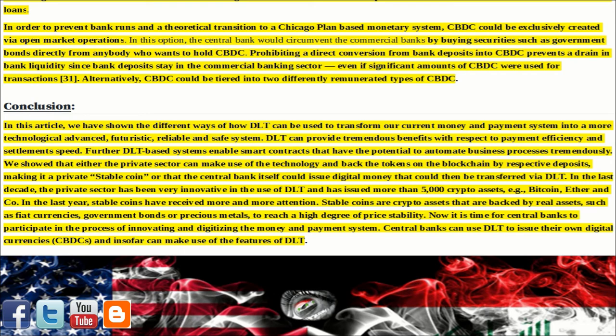In order to prevent bank runs and a theoretical transition to a Chicago Plan-based monetary system, CBDC could be exclusively created via open market operations. In this option, the central bank would circumvent the commercial banks by buying securities such as government bonds directly from anybody who wants to hold CBDC. Prohibiting a direct conversion from bank deposits into CBDC prevents a drain in bank liquidity, since bank deposits stay in the commercial banking sector even if significant amounts of CBDC were used for transactions. Alternatively, CBDC could be tiered into two differently remunerated types of CBDC.